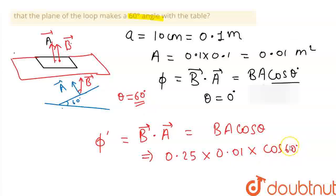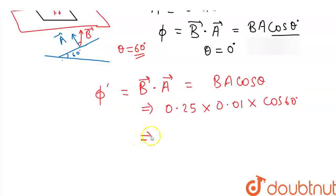The value of cos 60 is 0.5. So 0.5 into 0.01 into 0.25 gives us the new flux.